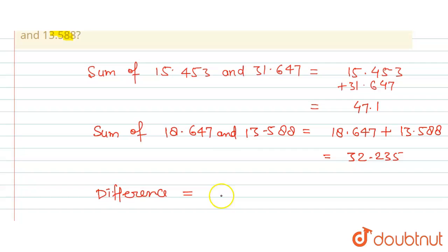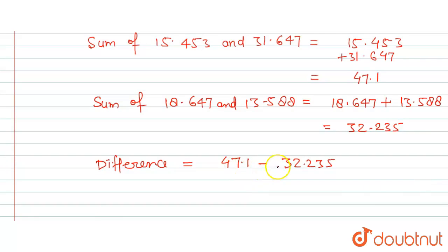The difference will be equal to the greater number, that is 47.1, and we will subtract 32.235. When we subtract 32.235 from 47.1, we will get 14.865.